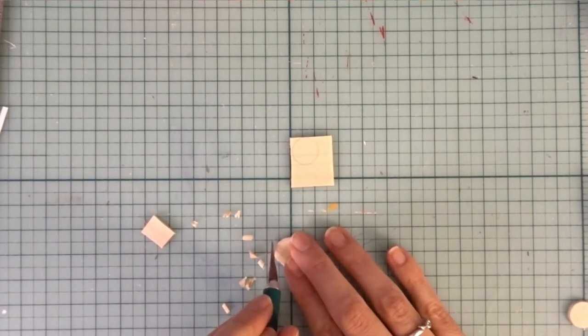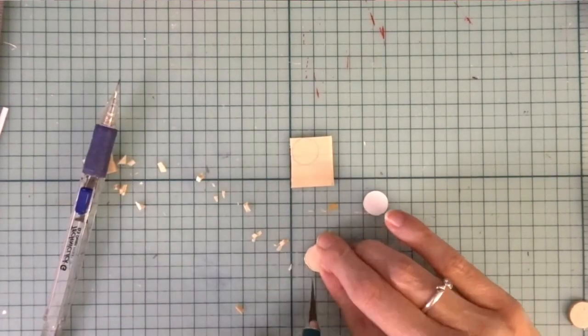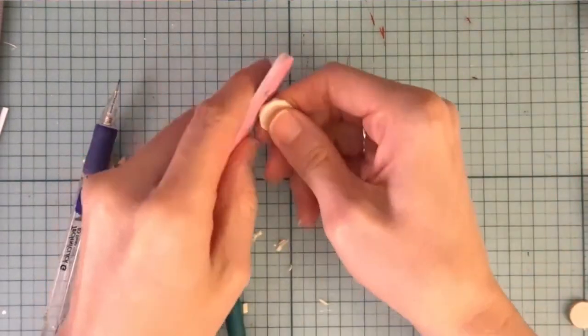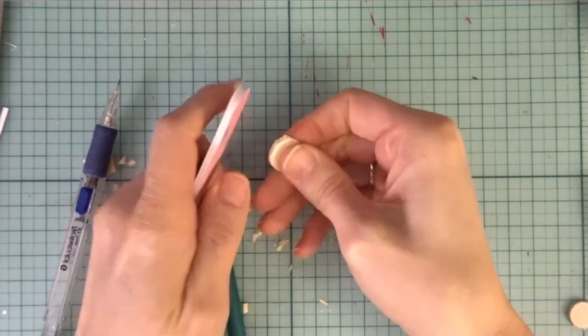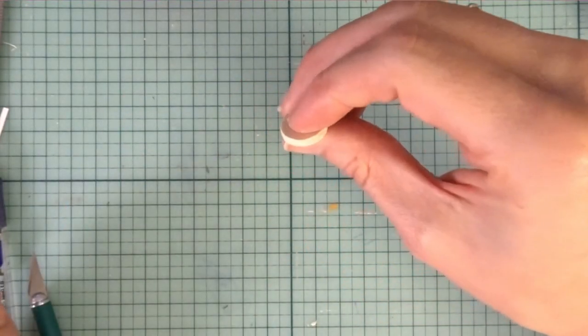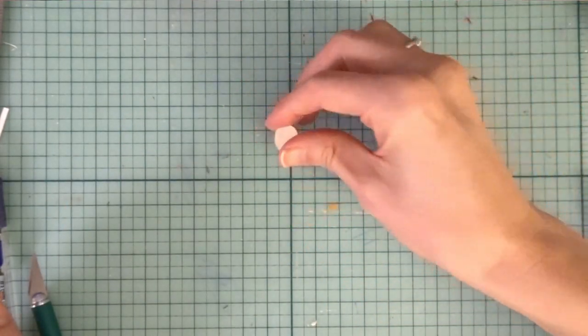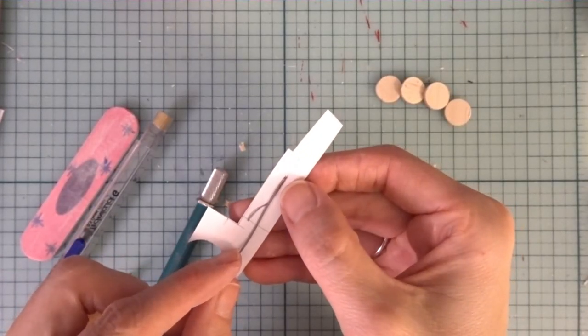These are tiny stools, but you can make them any size that you want as well. Now I'm going to sand it down so it looks nice and even like that. The next step is making the stool legs.